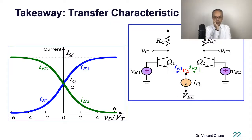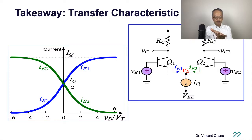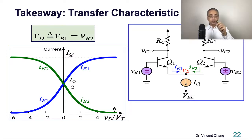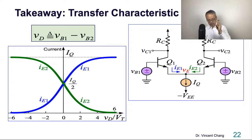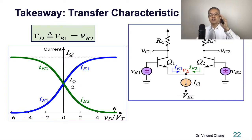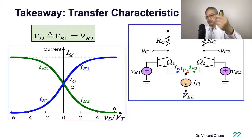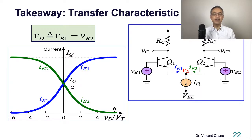Here is the takeaway — the transfer characteristic. The blue curve represents IE1 and the green curve represents IE2, plotted against the large-signal input differential voltage. I want you to get familiar with this transfer characteristic of the differential pair. We will go deeper starting from this in the next video, where you will learn about the three modes of operation of the differential pair. This is the end of the video — thanks for watching.